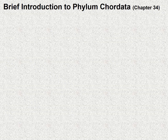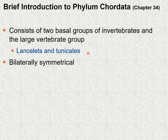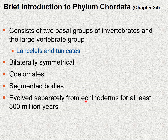Chapter 34 consists of two basal groups of invertebrates and the large vertebrate group. The two basal invertebrate groups include the lancelets and the tunicates. It's important to remember they do not have vertebrae, however they do belong to the phylum Chordata. All chordates have bilateral symmetry, are coelomates with a true coelom, and have segmented bodies. Even though chordates are also deuterostomes, they evolved separately from the echinoderms for at least 500 million years.